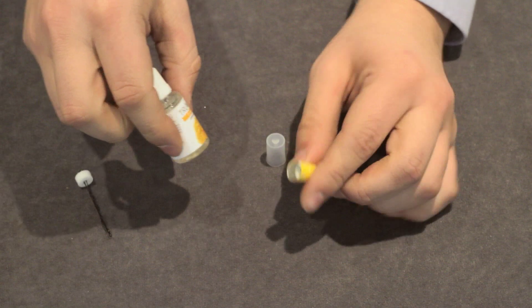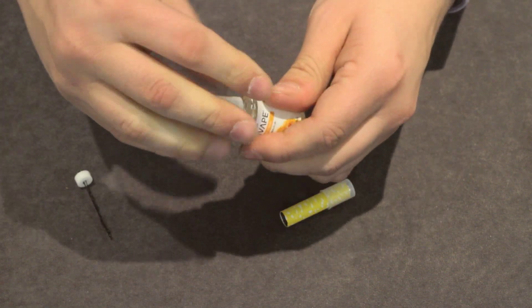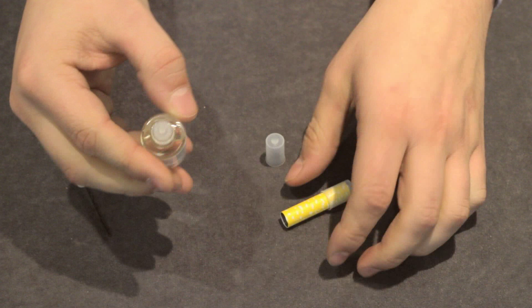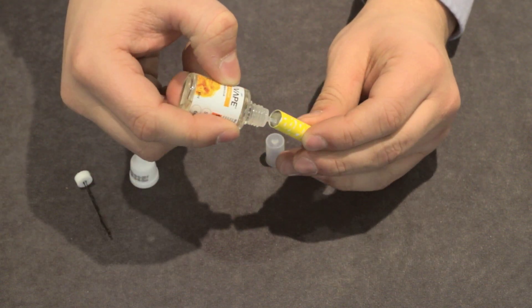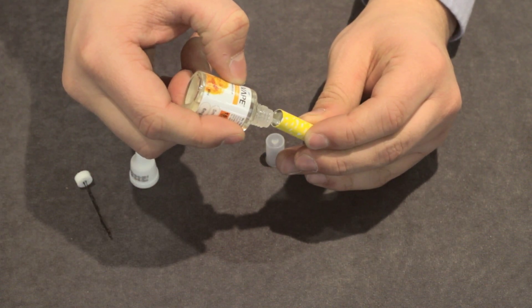When filling the cartridge, tilt it to one side at 45 degrees or so and gently drop the liquid onto the cotton wick, making sure not to get any into the center hole.